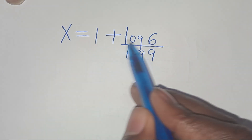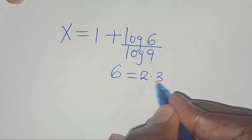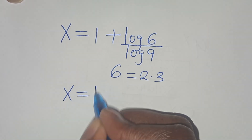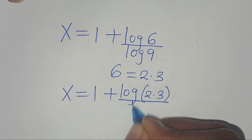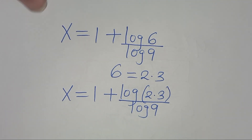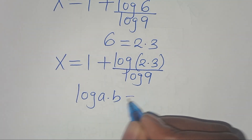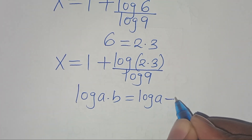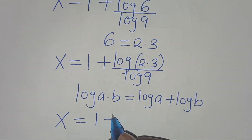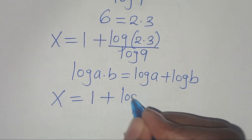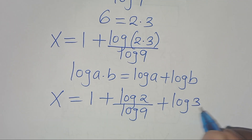We can express 6 as 2 times 3, so this implies that x is equal to 1 plus log(2 times 3) over log 9. Applying the logarithm product property, we have x is equal to 1 plus log 2 over log 9, then plus log 3 over log 9.